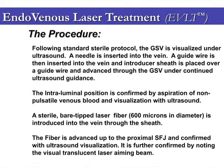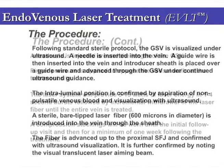A sterile bare-tip laser fibre, 600 microns in diameter, is introduced into the vein through the sheath. The fibre is advanced up to the proximal sapheno-femoral junction and confirmed with ultrasound visualisation, further confirmed by noting the visual translucent laser aiming beam.